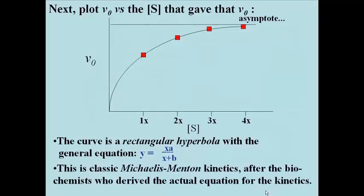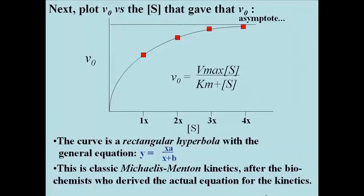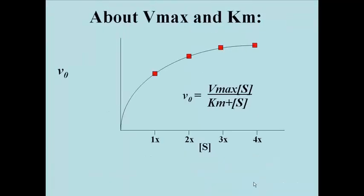This is classic Michaelis-Menten kinetics, typical of many catalyzed biochemical reactions, named after the biochemists who derived the actual equation for the kinetics. The equation for this curve follows the formula of that for a rectangular hyperbola, and is V0 equals Vmax times the substrate concentration, divided by Km plus the substrate concentration.